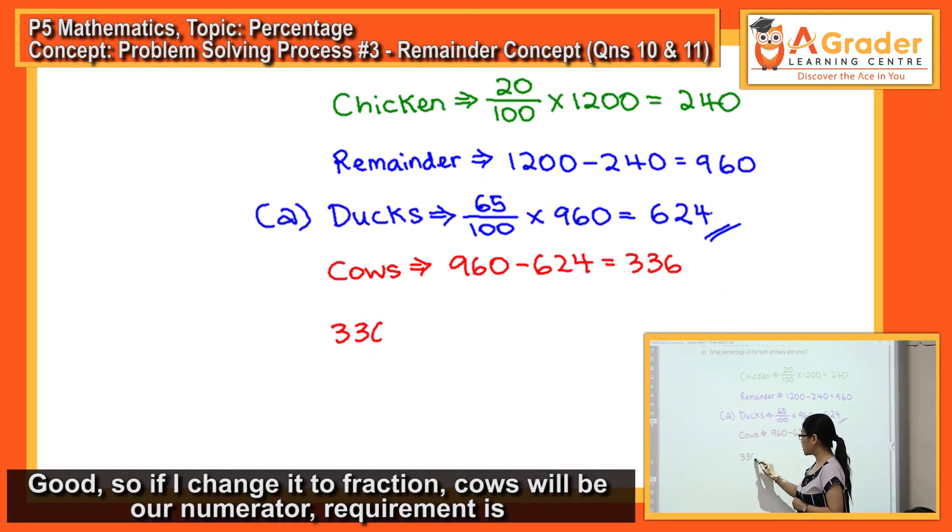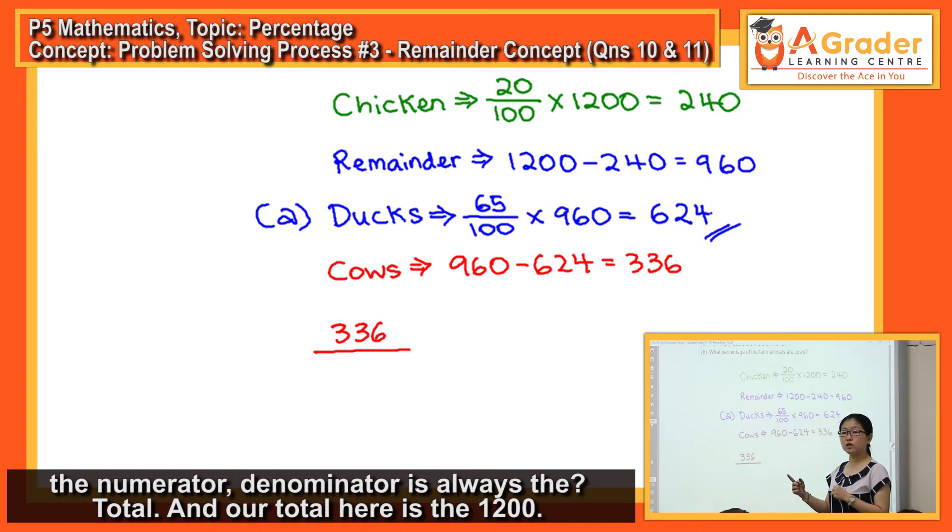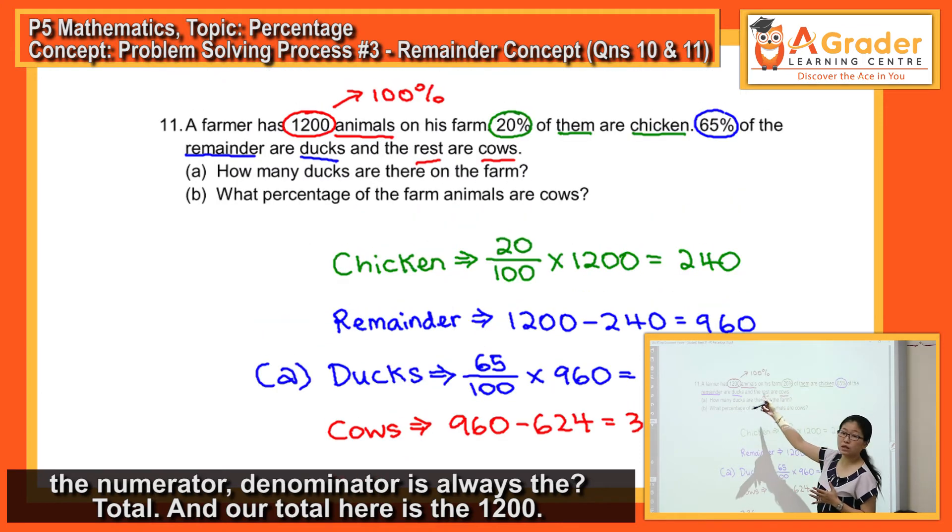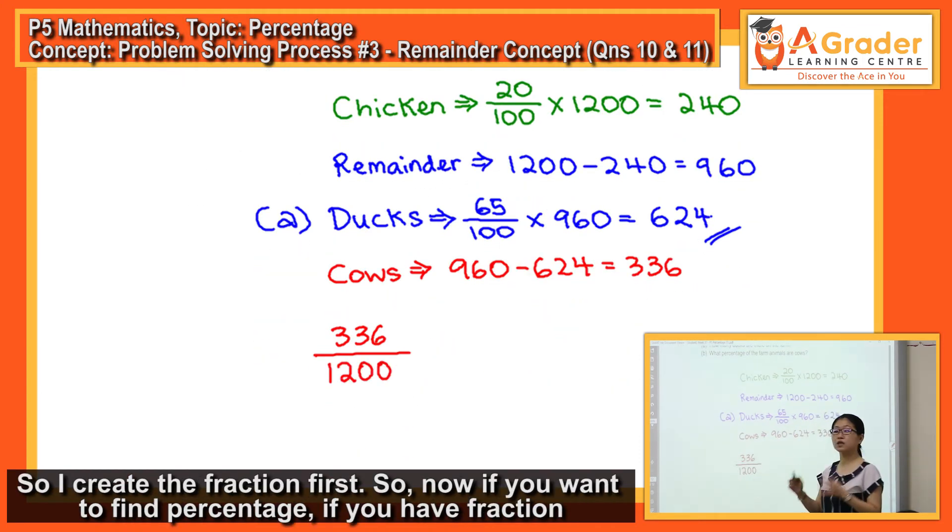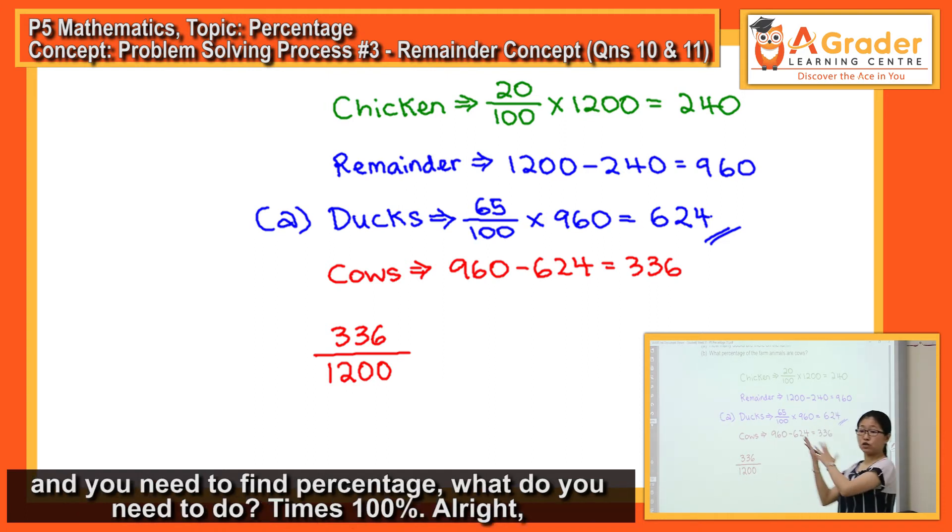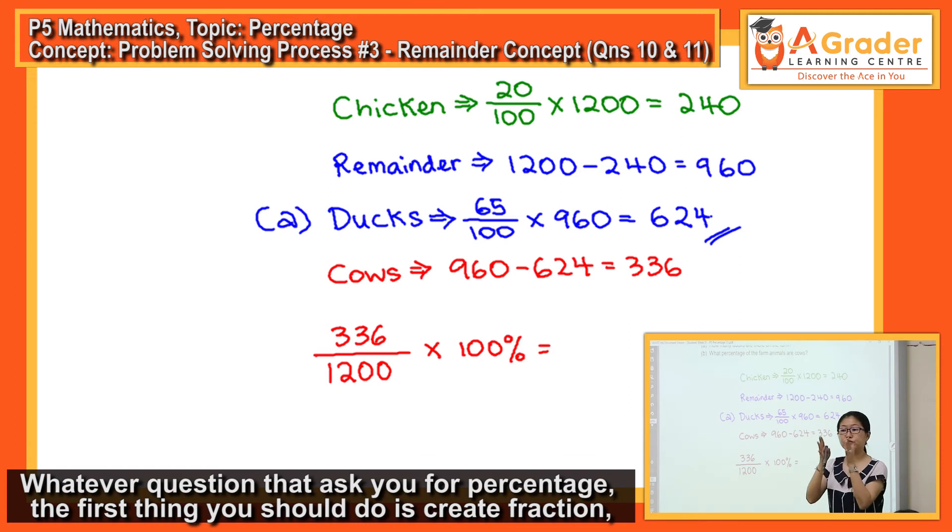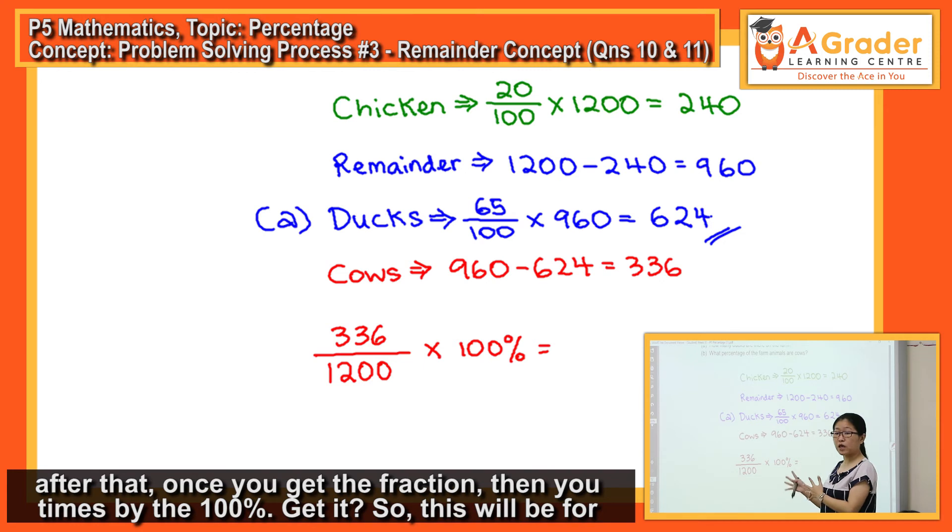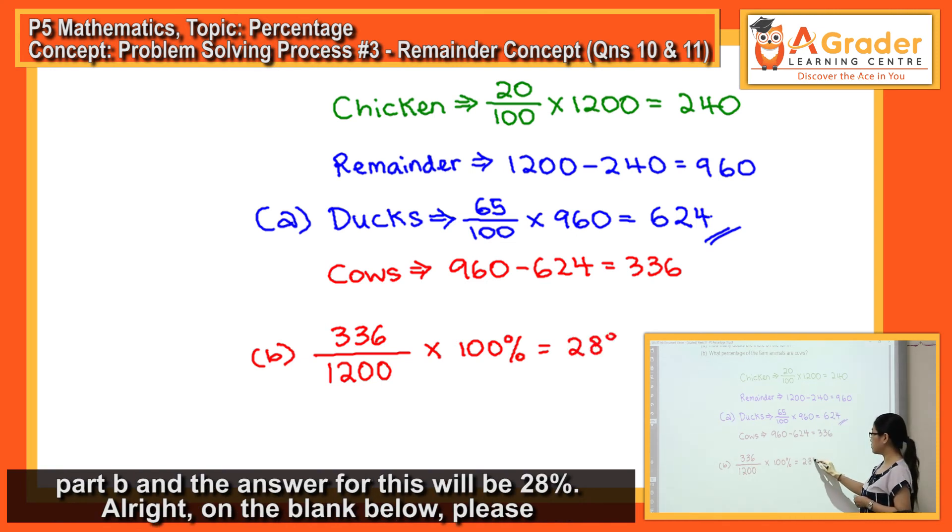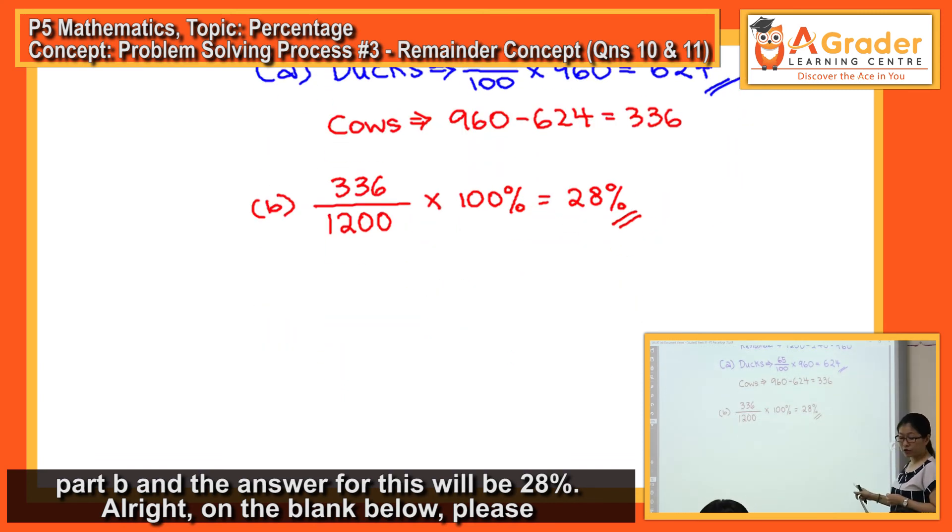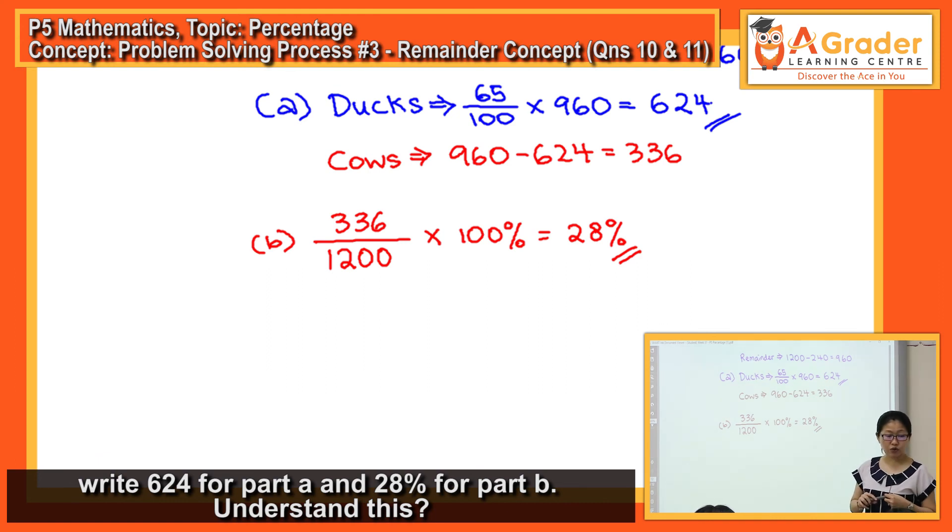Good. So if I change it to fraction, cows will be our numerator. The requirement is the numerator. Denominator is always the total, and our total here is the 1200. So I create the fraction first: 336/1200. So now if you want to find percentage, if you have fraction and you need to find percentage, what will you need to do? Times 100%. That's why I said always remember to do it this way: take the fraction times 100%. Whatever question they ask you for percentage, the first thing you should do is create fraction. After that, once you get the fraction, then you times by the 100%. This will be for part B and the answer for this will be 28%. So on the blank below, please write 624 for part A and 28% for part B. Understand this? Alright, bye.